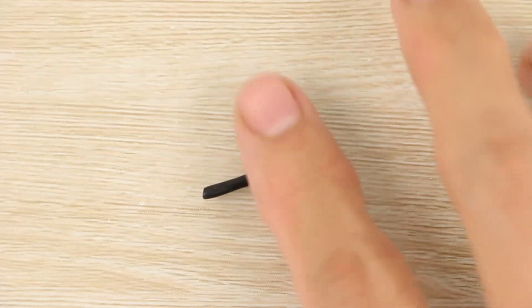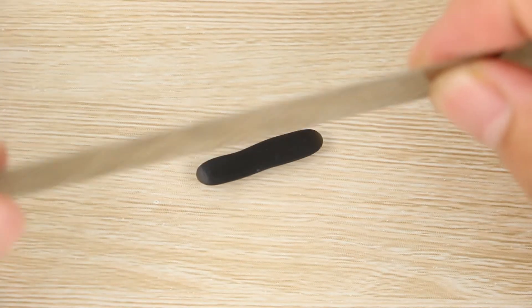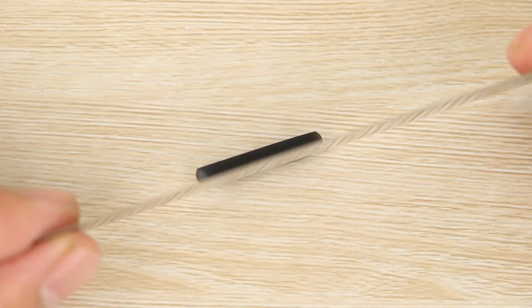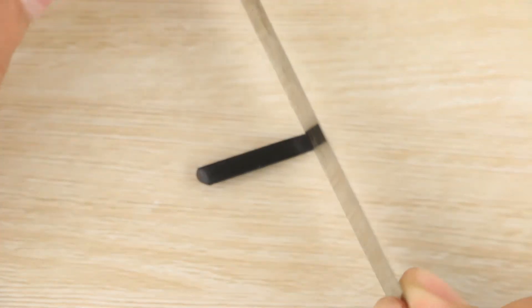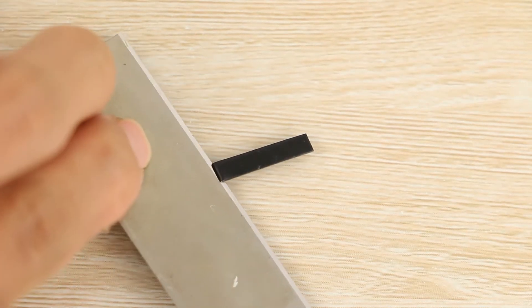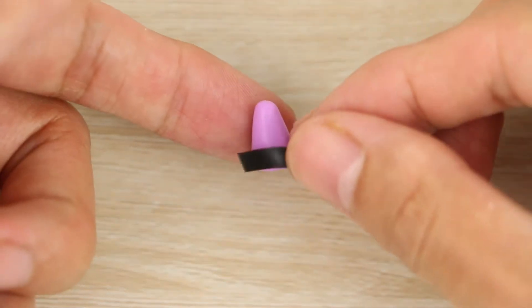Now to make the black band I'm rolling a small ball into a snake and flattening it with a rolling pin, then trimming the edges with the blade and finally wrapping it around the base of the cone.